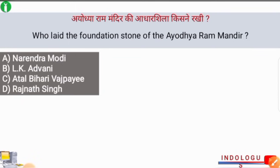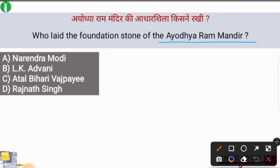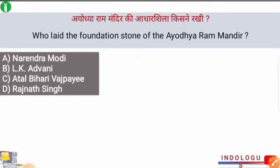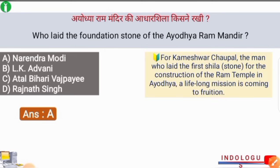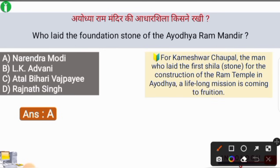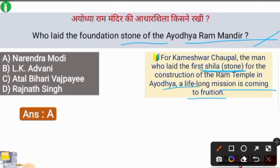Who laid the foundation stone of Ayodhya Ram Mandir? The correct answer is option number A, i.e. Narendra Modi. Prime Minister Narendra Modi laid the foundation stone of Ayodhya Ram Mandir. Additionally, Kameshwar Chawpal was the man who laid the first shila — the first stone for the Ram Mandir in Ayodhya — in 1989, which was a life-long mission coming to fruition.